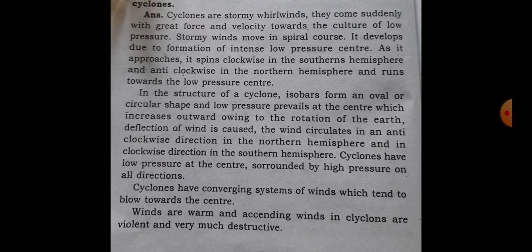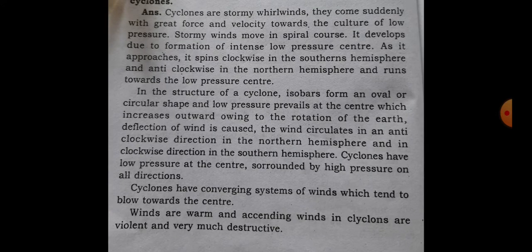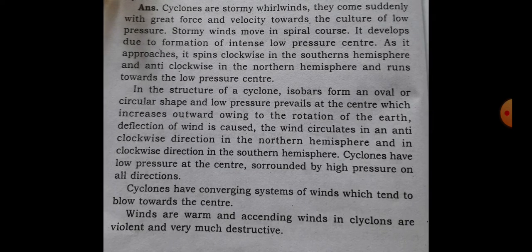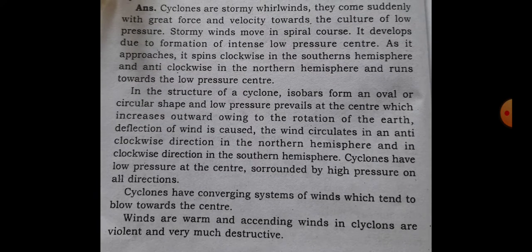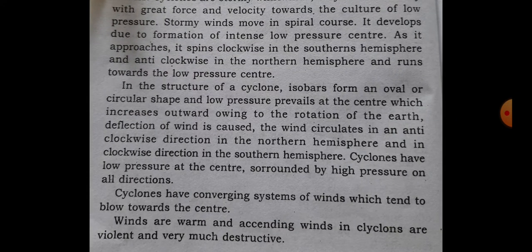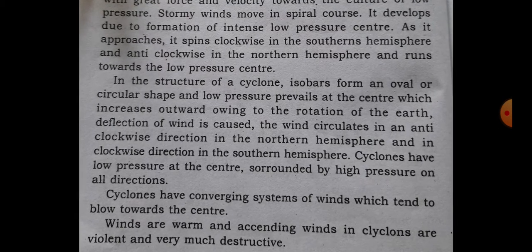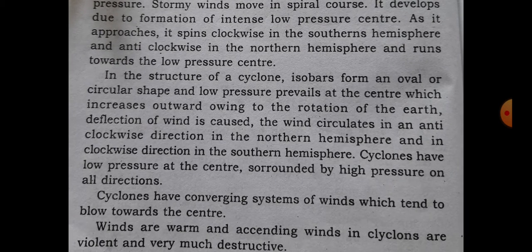Cyclones are stormy wild winds. They come suddenly with great force and velocity towards the center of low pressure. Stormy wind moves in a spiral course. It develops due to formation of an intense low pressure center. As it approaches, it spins clockwise in the southern hemisphere and anti-clockwise in the northern hemisphere, and runs towards the low pressure center.